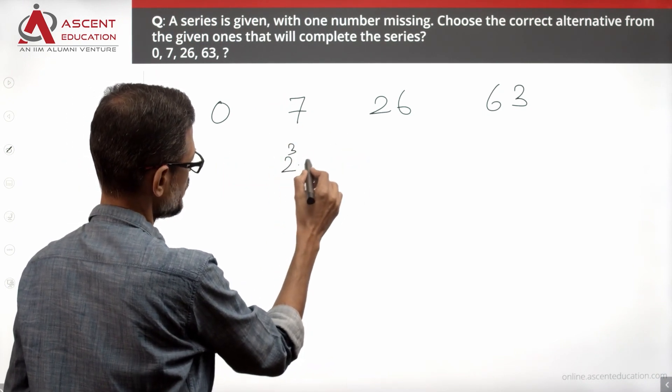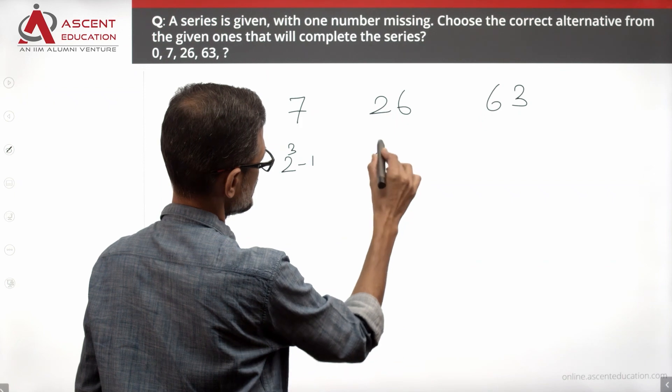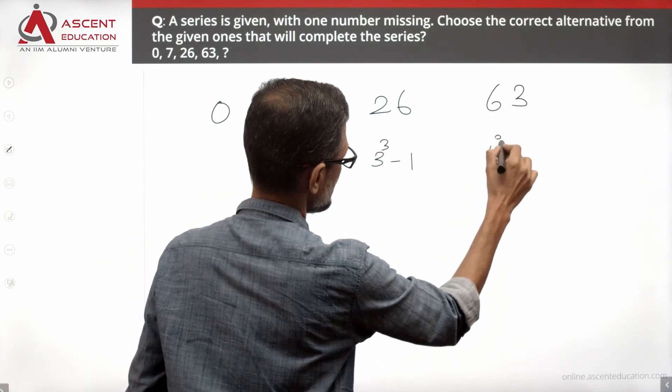So this is actually 2 cube minus 1. Then 27 minus 1, which is 3 cube minus 1. Then 4 cube minus 1.